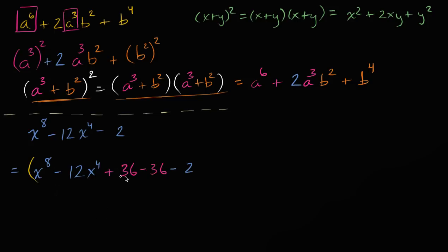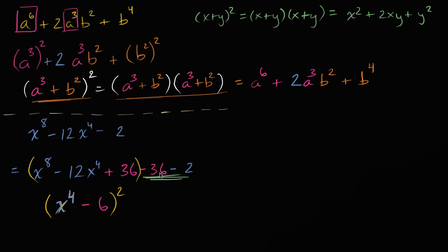The whole point of doing it is that this part is now a perfect square eighth degree polynomial. So this is going to be the same thing as x to the fourth minus six, the whole thing squared, and then minus 36 minus two — which is subtracting 38. Just like that, this is completing the square, but done with an eighth degree polynomial instead of a second degree one.